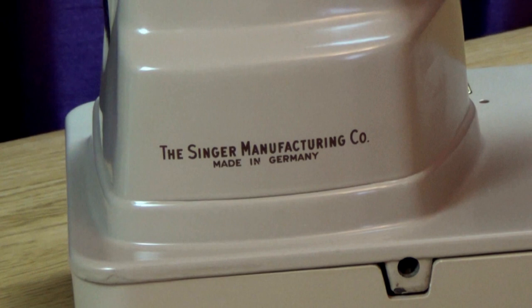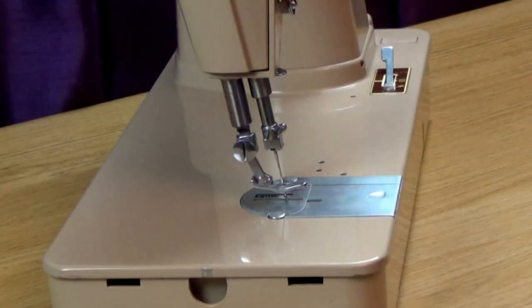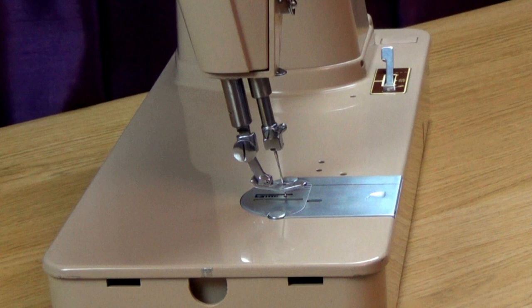This 404G was made in Germany in the early 1960s. The 400 series were known as slant shanks, which move the needle towards the front of the machine, making it easier to see your work, and meaning the sewer doesn't have to hunch up as much to see the needle.